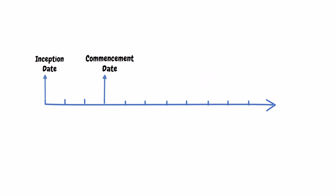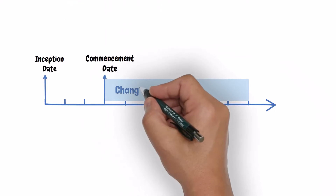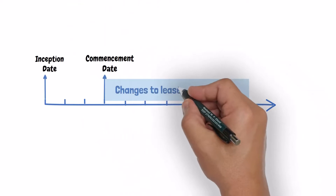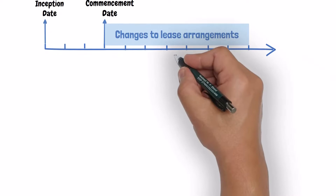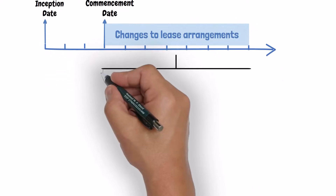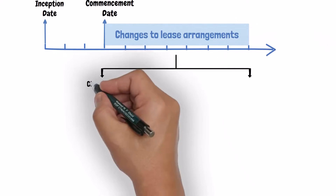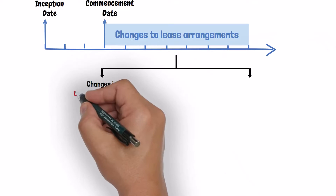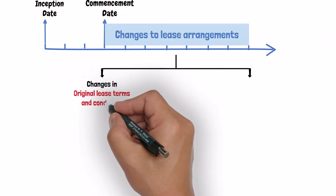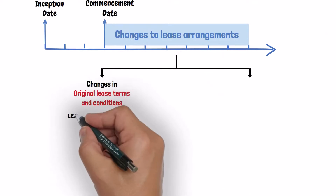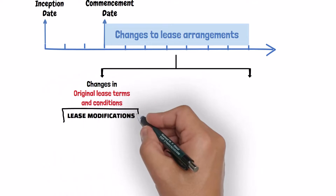In this lecture, we will talk about the changes that might occur to the lease arrangement after the commencement date. There are two categories for these changes. The first category is the change in the original lease terms and conditions, and this change is known as a lease modification.